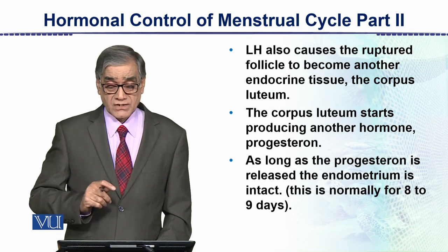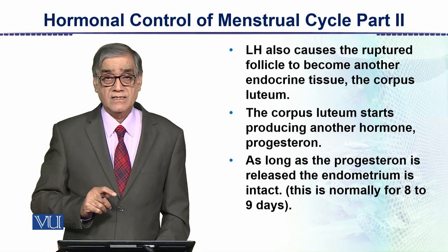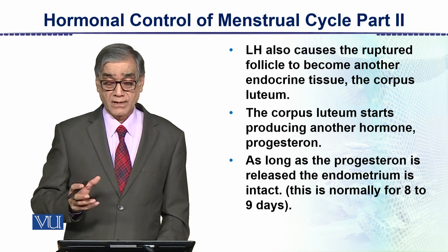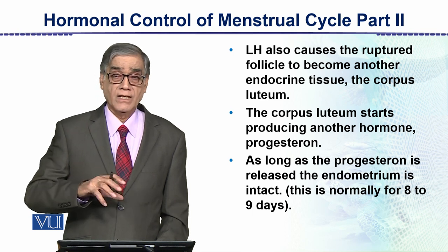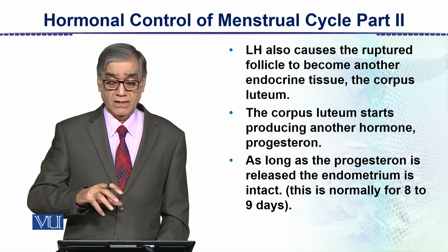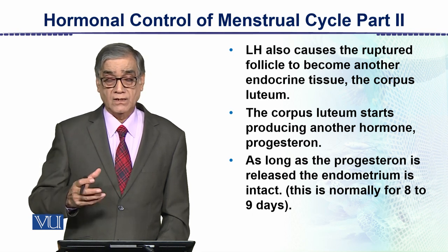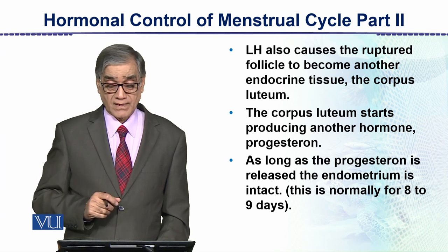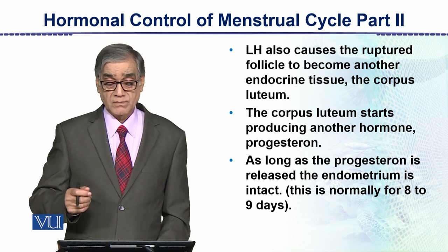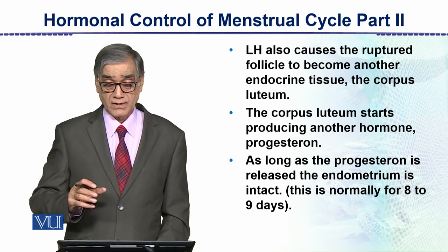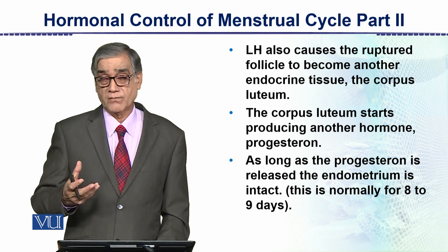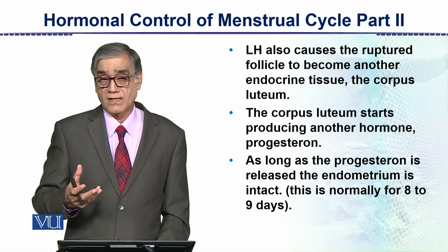LH also causes the ruptured follicle to become another endocrine tissue — the corpus luteum. After this, the corpus luteum starts producing another hormone which is progesterone.